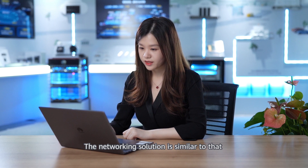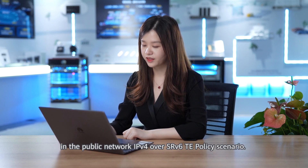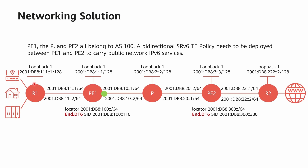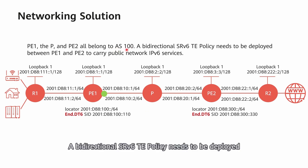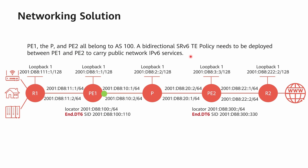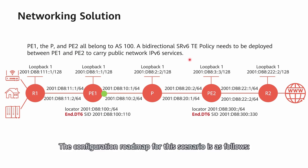The networking solution is similar to that in the public network IPv4 over SRv6 TE policy scenario. P1, the P, and P2 all belong to AS100. A bidirectional SRv6 TE policy needs to be deployed between P1 and P2 to carry public network IPv6 services. The configuration roadmap for this scenario is as follows.